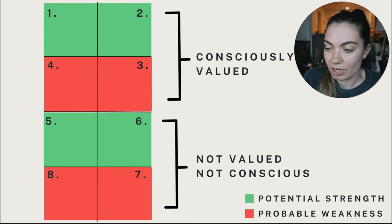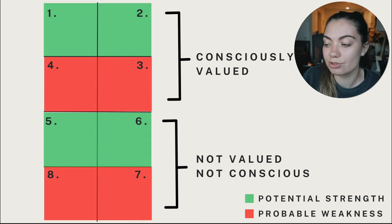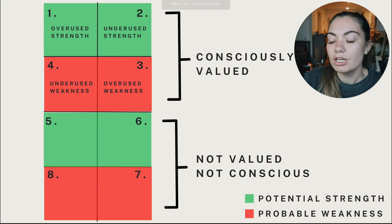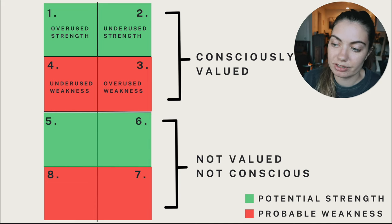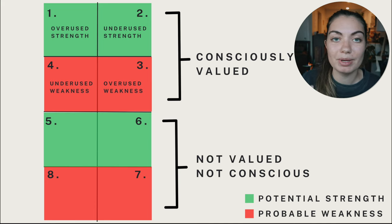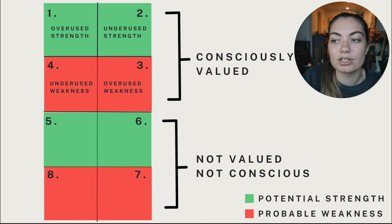I've color-coded these green and red. Functions one, two, five, and six are potential strengths — not by default, but if exercised there's more potential for them to become strengths. The red ones are probable weaknesses. If you're in your 60s you may be well-rounded, but if you're in your 20s there's every likelihood it's a weakness. Your first function tends to be an overused strength — it's who you feel like you are, and you use it all the time.